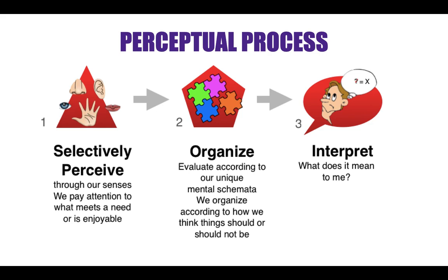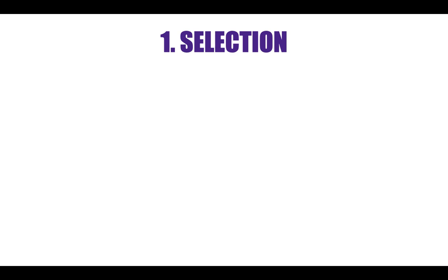The third stage is interpretation. We take all events, objects and persons, organize all the information and then interpret it — that is, what does it mean to me? Now let's see each stage in a little detail. The first step is selection.